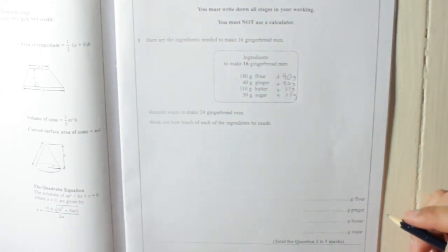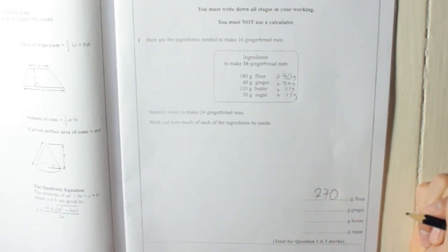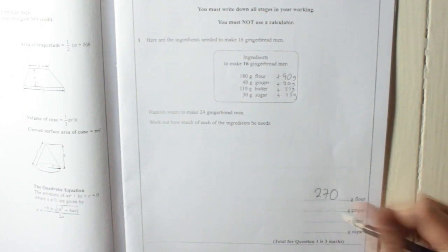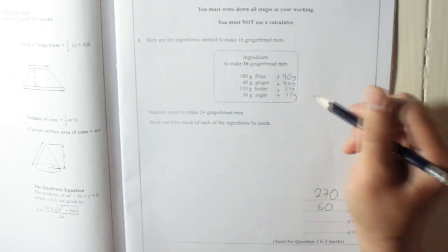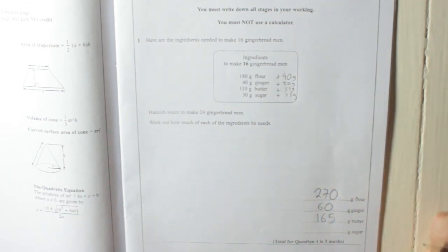How much flour does he need? He needs 180 plus 90, 270 grams, already written for us. Ginger, 40 grams plus 20 grams is 60 grams. 110 plus 55 is 165, and 30 plus 15 is 45 grams.